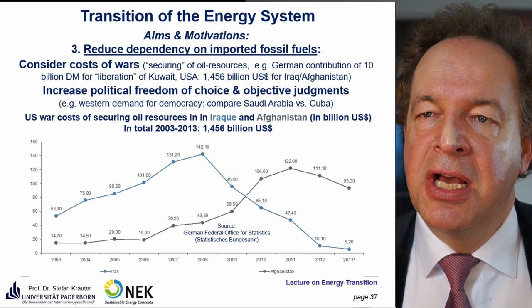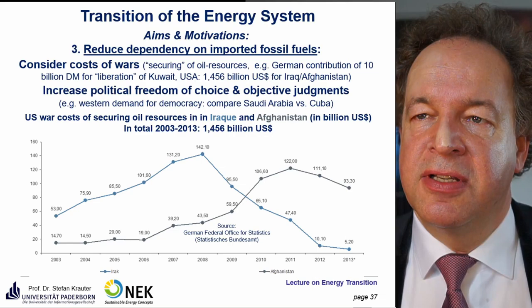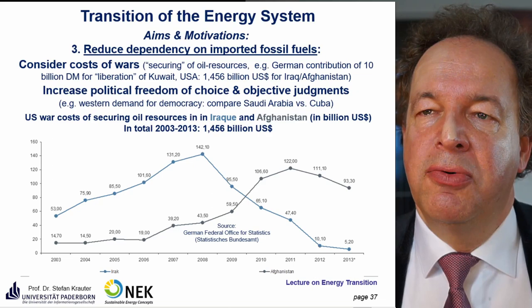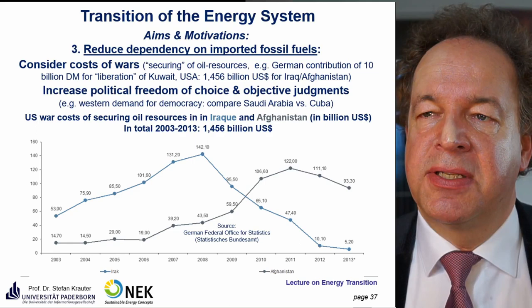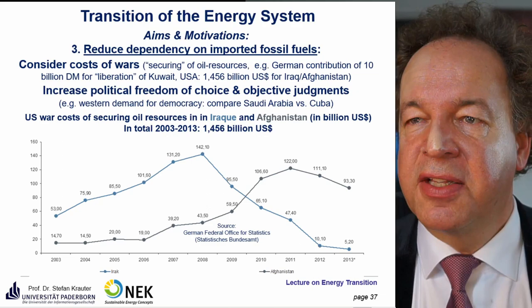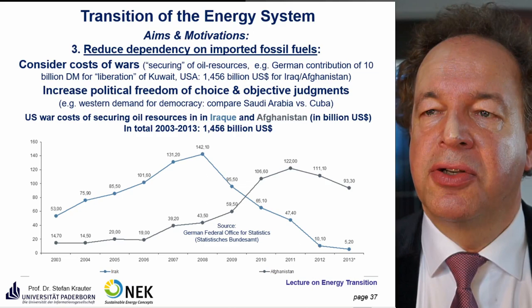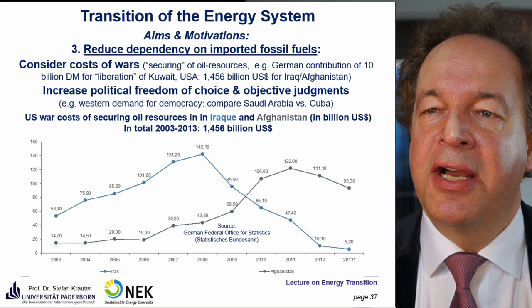A third motivation for energy transition is reducing dependency on imported fossil fuels — considering the costs of wars securing oil resources in the Middle East. Germany contributed about 10 billion German marks for the liberation of Kuwait. The US spent about 1,556 billion US dollars on wars in Iraq and Afghanistan — already a share of what a global solar energy supply would cost. Dependency on fossil fuel suppliers also affects political decisions; for example, there is little complaint about democracy in Saudi Arabia compared to Cuba, which has no oil.